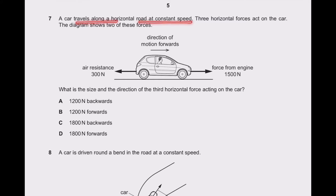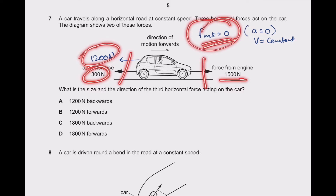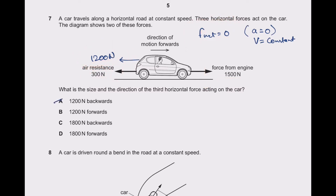Question 7: a car travels along a horizontal road at constant speed. Three horizontal forces act on the car — 1500 N from the engine, 300 N due to air resistance. Since speed is constant, F_net equals zero. So a third force must act backward: 1200 N, because 1200 plus 300 equals 1500, and these forces cancel out giving F_net equals zero. So 1200 N in the backward direction is the right answer.